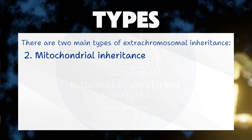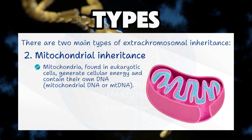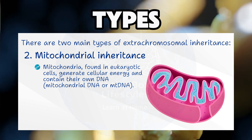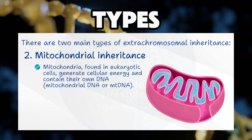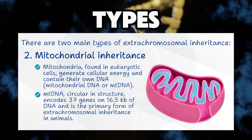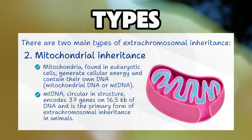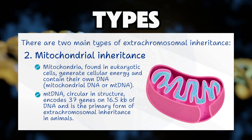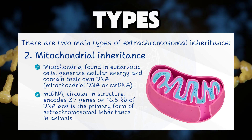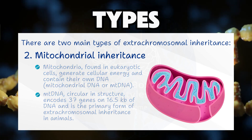Type 2: Mitochondrial Inheritance. Mitochondria, found in eukaryotic cells, generate cellular energy and contain their own DNA — mitochondrial DNA. Mitochondrial DNA is circular in structure and encodes 37 genes on 16.5 kb of DNA, and is the primary form of extra-chromosomal inheritance in animals.